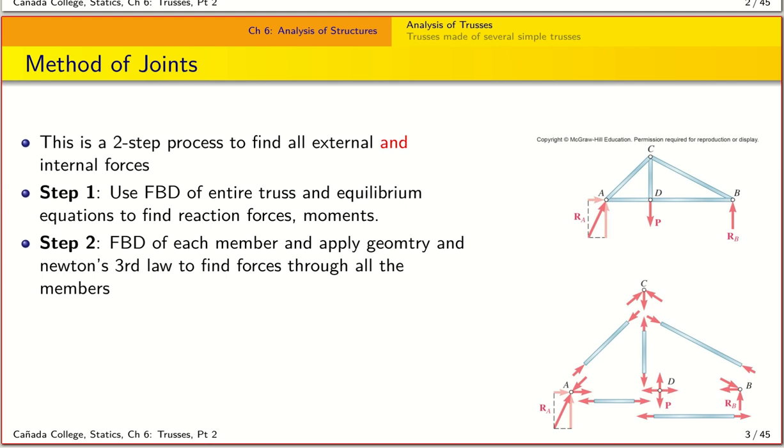Remember, the method of joints was a two-step process in which you found all the external and internal forces. In step one, you use the free body diagram of the entire truss and then the corresponding equilibrium equations for reaction forces and moments. In step two, you apply all the forces including within the members, use Newton's third law to find the forces through those members.